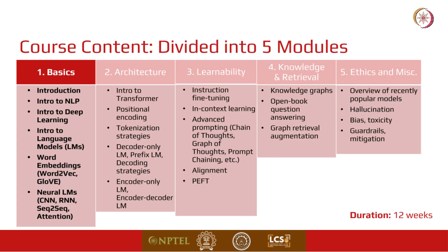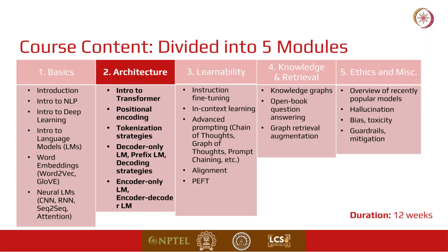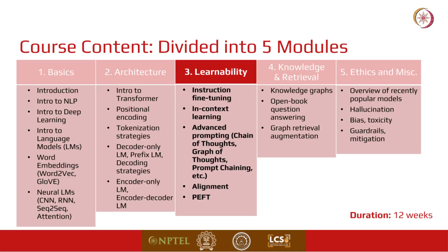The entire course is divided into 5 modules. The first module covers the basics, including introduction to NLP, deep learning, language models, and word embedding methods like Word2Vec and GloVe. Then we move to neural language models including CNN, RNN, sequence-to-sequence models, and attention. In the second module, we discuss the architecture of different LLMs, starting with the transformer model, covering positional encoding, tokenization strategies, decoder-only, encoder-only and encoder-decoder models. In the third module, we discuss learnability aspects: instruction fine-tuning, in-context learning, and advanced prompting techniques like chain of thoughts, graph of thoughts, and prompt chaining.